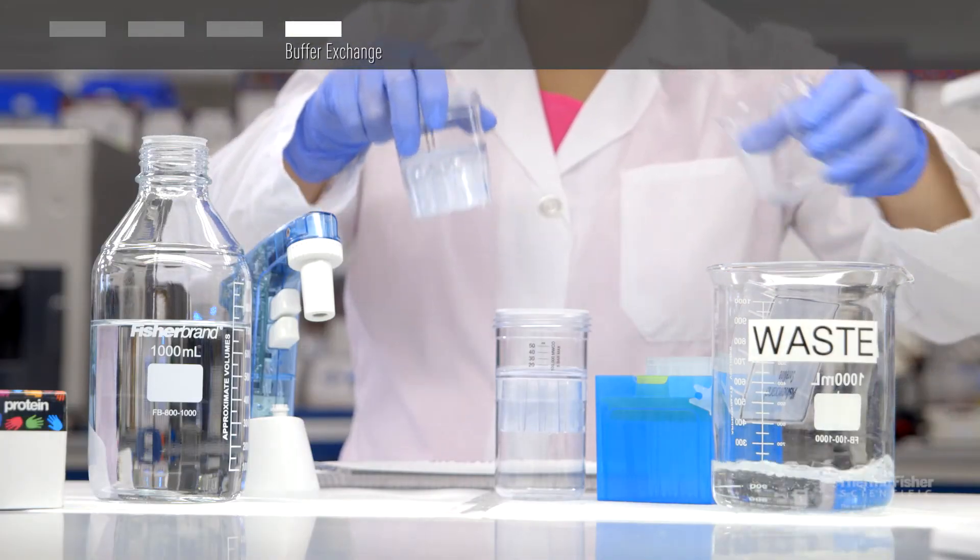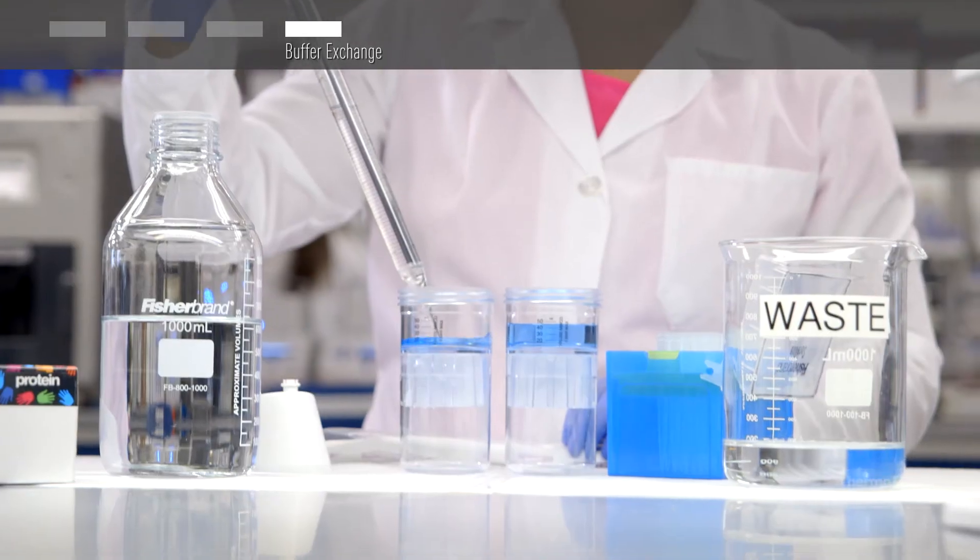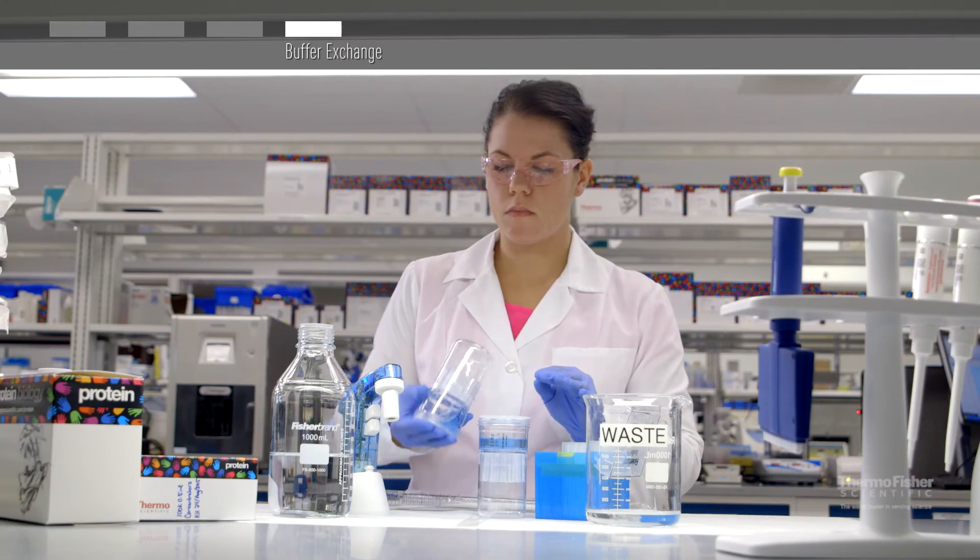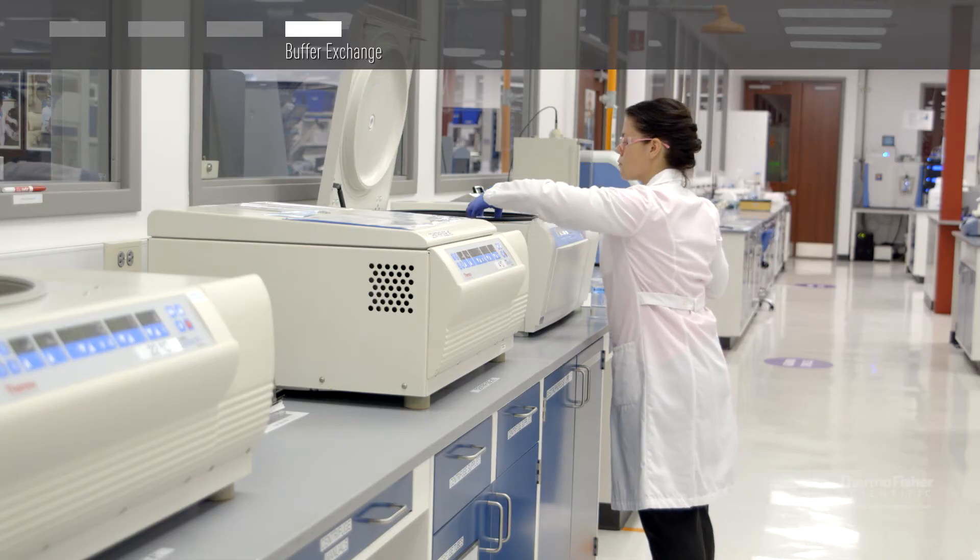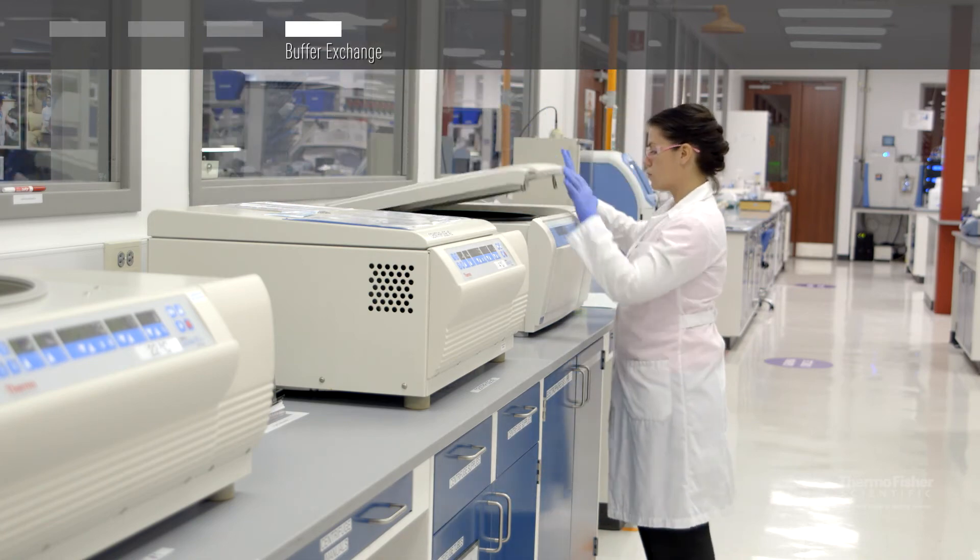If you need to desalt and or buffer exchange your concentrated sample, simply decant the filtrate, reassemble the unit, dilute the retentate to the original volume with exchange buffer, and then cap and mix. Repeat centrifugation followed by addition of exchange buffer until desired solute removal has been achieved.